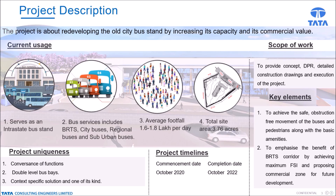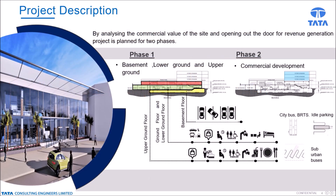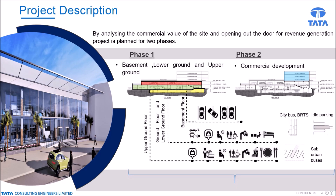The project is planned in two phases. The first phase includes commercial and bus development — construction from basement, lower, and upper ground floor. The second phase includes further commercial development, adding three more floors with 4,223 square meters of built-up area.